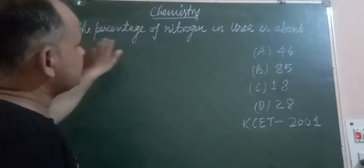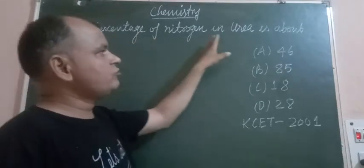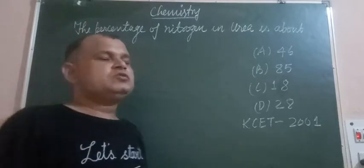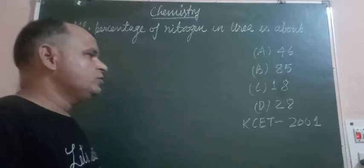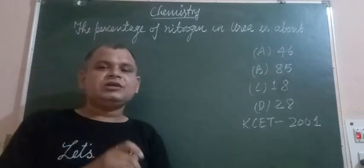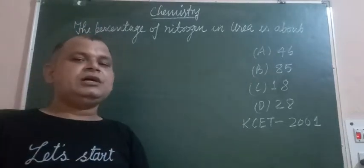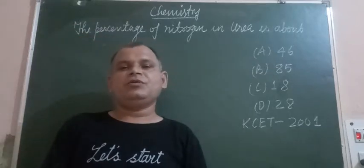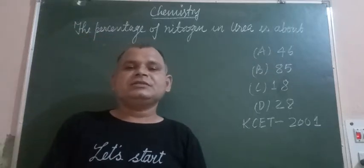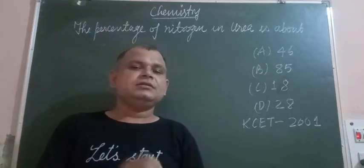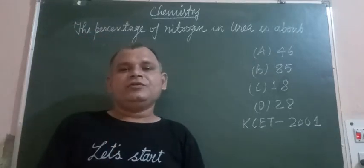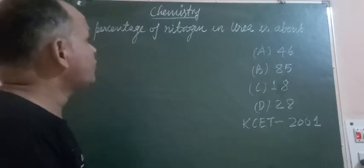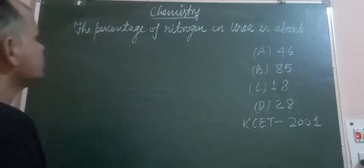The question asks: what is the percentage of nitrogen in urea? To let you know something about urea — urea is the first organic compound which was synthesized in a laboratory, for the first time in the history of organic compounds.